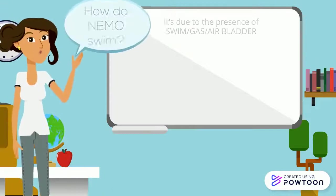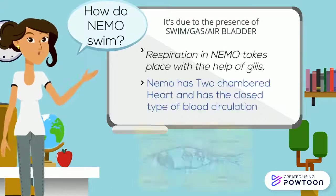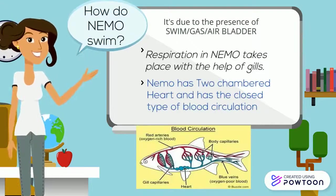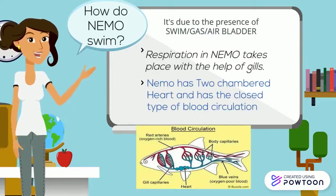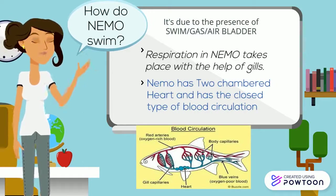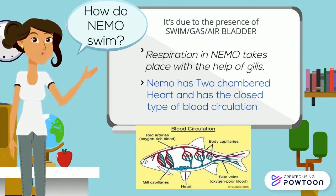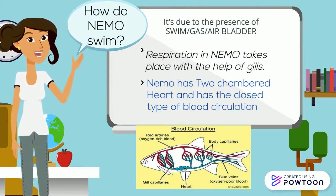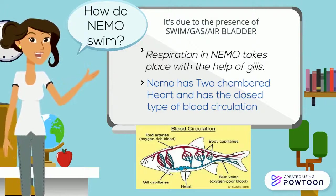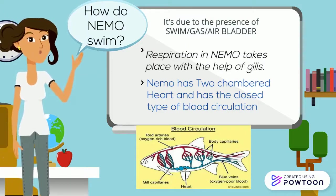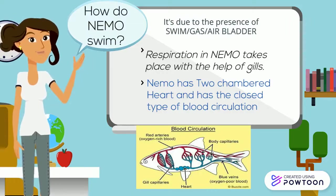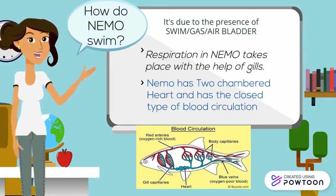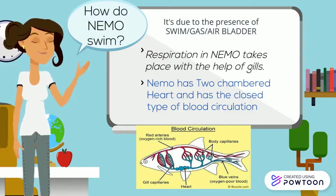How does Nemo swim? It is due to the presence of a swim bladder that allows it to maintain stable buoyancy in water and also to sleep without sinking to the bottom. It has gills to breathe, which allow it to absorb oxygen from water and release carbon dioxide. It has a two-chambered heart and a closed type of blood circulation.